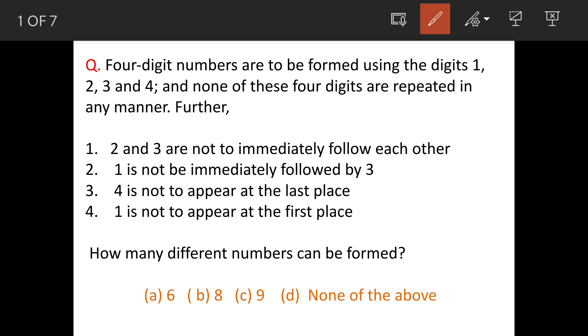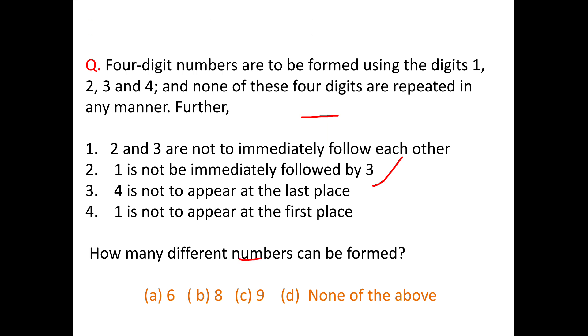Four-digit numbers are to be formed using digits 1, 2, 3, and 4, and none of the four digits are to be repeated in any manner. Four more conditions are given. The question is: how many numbers can be formed?